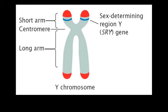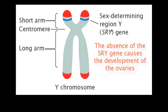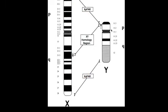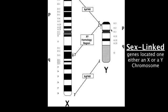Here's a model of a duplicated Y chromosome showing the locus of the SRY gene. The absence of the SRY gene causes the development of the ovaries. Since a zygote with two X chromosomes will have no SRY gene, it will develop into a fetus that eventually has ovaries. Scientists have discovered 78 other genes that are only found on the Y chromosome and not on the X. A gene located on either of the sex chromosomes is called sex-linked — those on the Y chromosome are called Y-linked and those on the X are called X-linked.